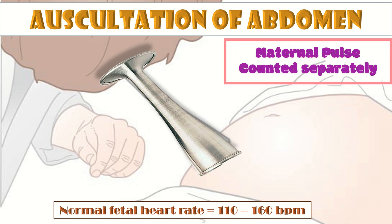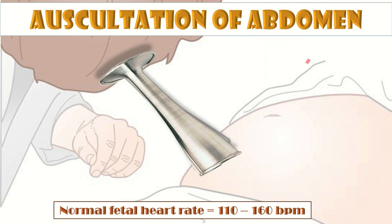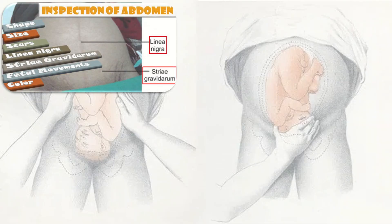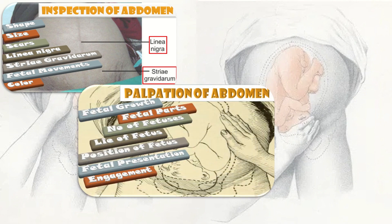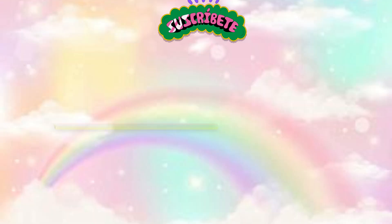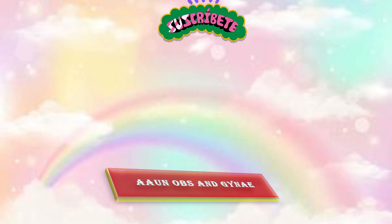To summarize: in inspection, we check the shape, size, scars, linea nigra, striae gravidarum, fetal movements, and color of the abdomen. In palpation, we check fetal growth, fetal parts, number of fetuses, lie, position, presentation, and engagement. In auscultation, we check for the fetal heart rate. Thank you — that was all about obstetric examination.